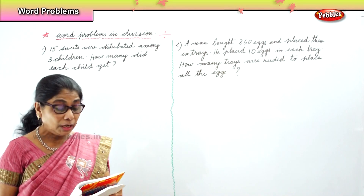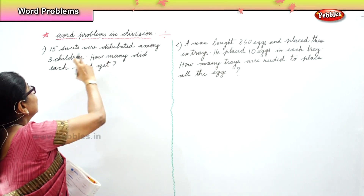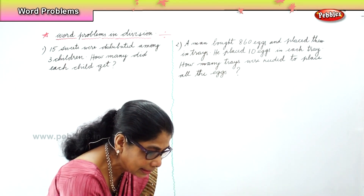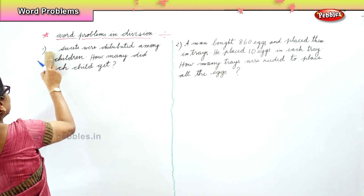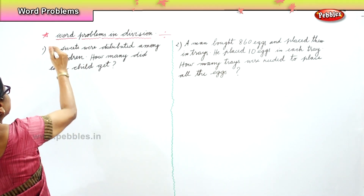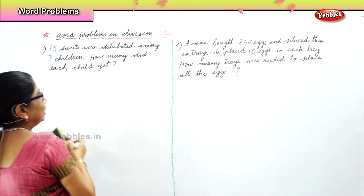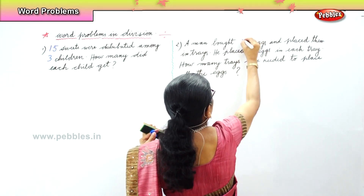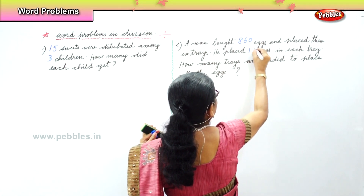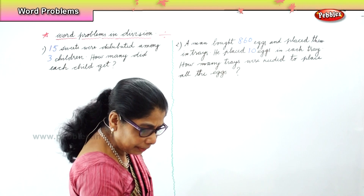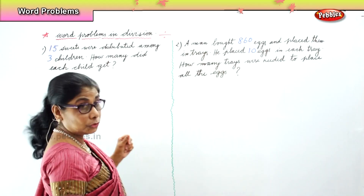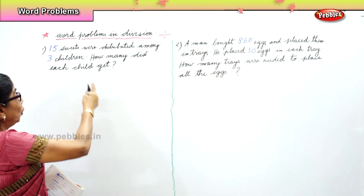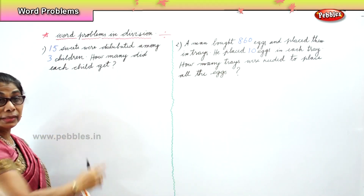So what will be the first statement? Total number of sweets — that is 15. We will write all these numbers: 15 and 3 for the first problem, and 860 and 10 for the second. So the first statement will be: total number of sweets is 15. Then, number of children. Therefore, number of sweets each child gets. So three statements.